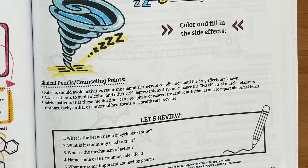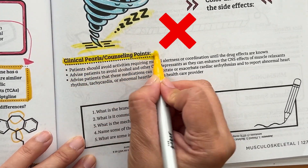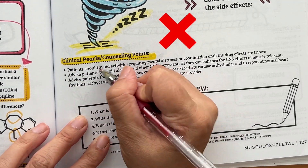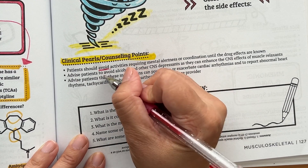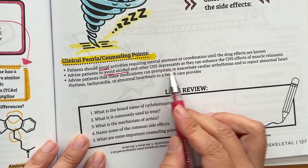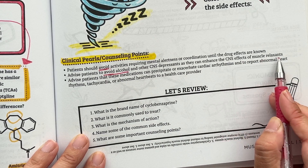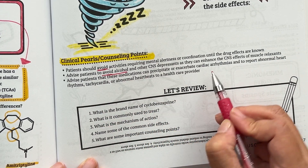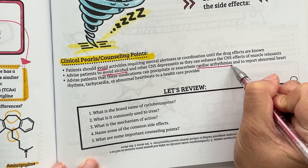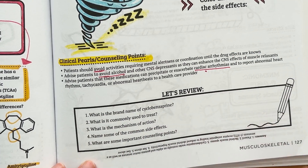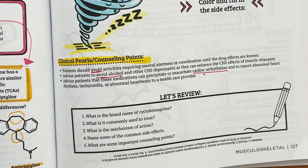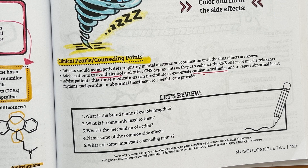Let's review some important clinical pearls and counseling points. Patients should avoid activities requiring mental alertness or coordination until the drug effects are known. Advise patients to avoid alcohol and other CNS depressants, as they can enhance the CNS effects of muscle relaxants like cyclobenzaprine. Because cyclobenzaprine is similar to TCAs, they have similar cardiac side effects, so make sure to advise patients that these medications can precipitate or exacerbate cardiac arrhythmias and to report abnormal heart rhythms or tachycardia to a healthcare provider.